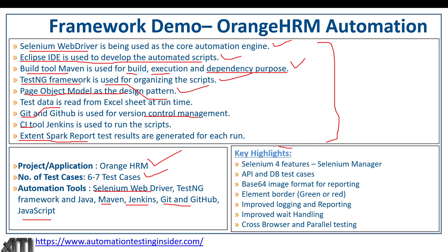The key highlights of this framework: we are going to use Selenium 4 features, including new locator strategies, and Selenium Manager so we don't explicitly provide the driver path — that will be automatically handled by Selenium Manager, which is a new feature in Selenium 4. We are also going to automate API and database test cases — maybe a couple of test cases to show how we can automate API and database-related scenarios in our framework.